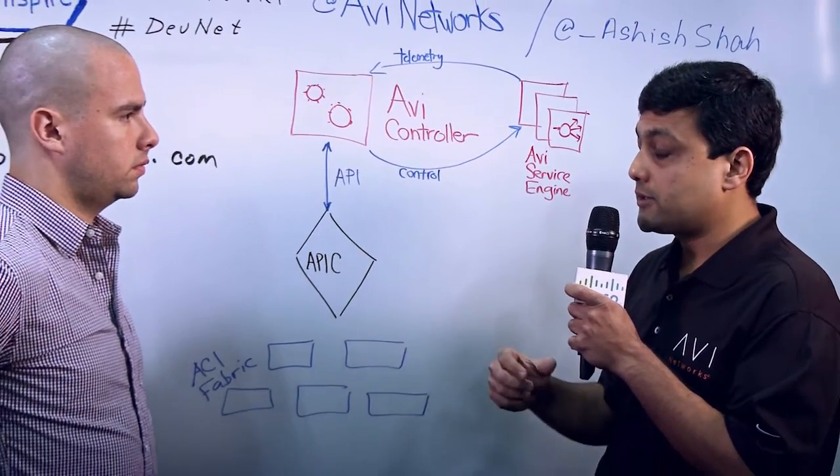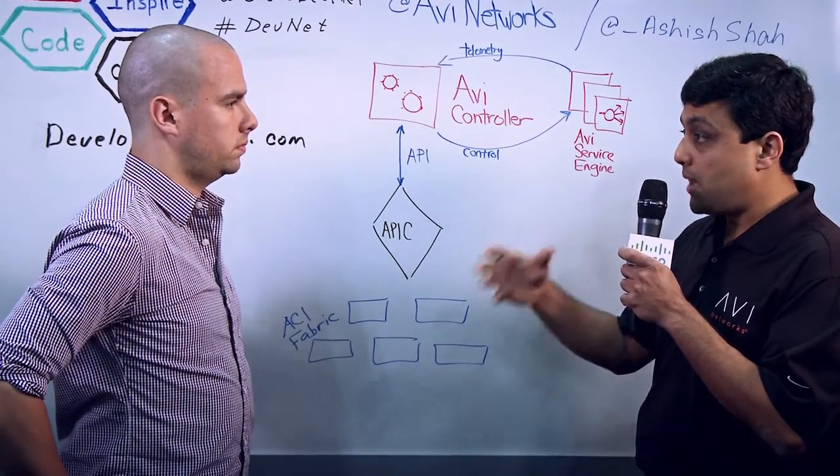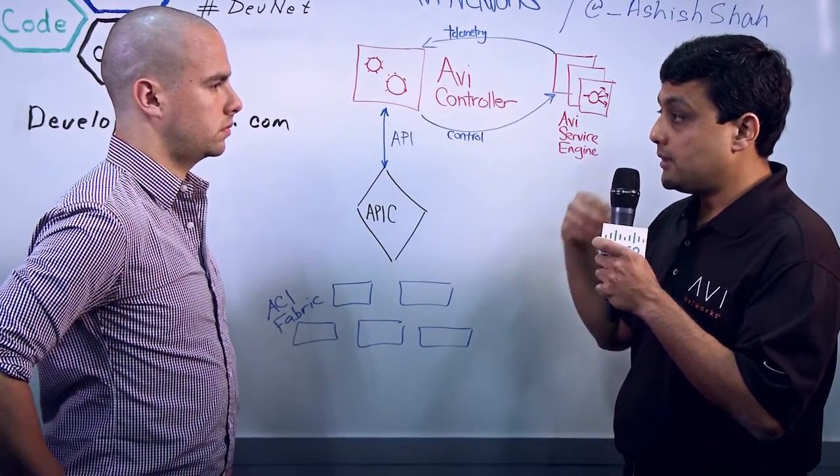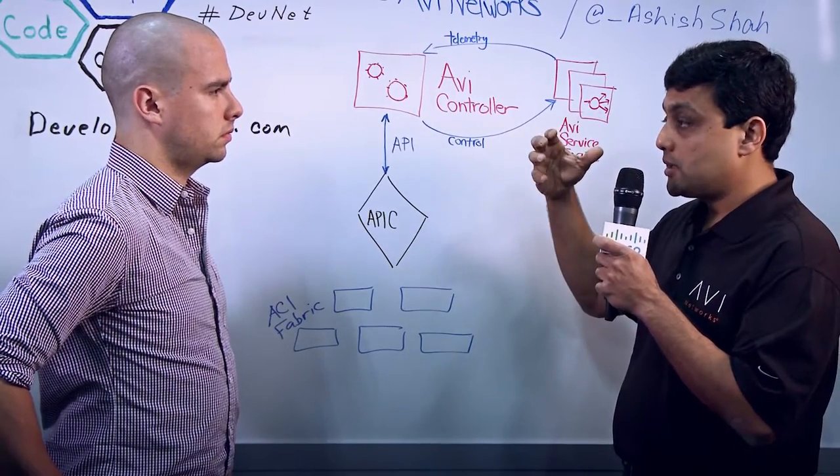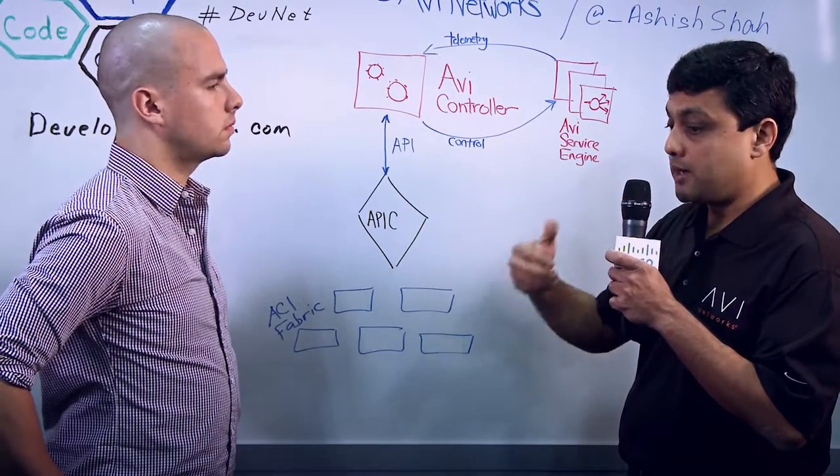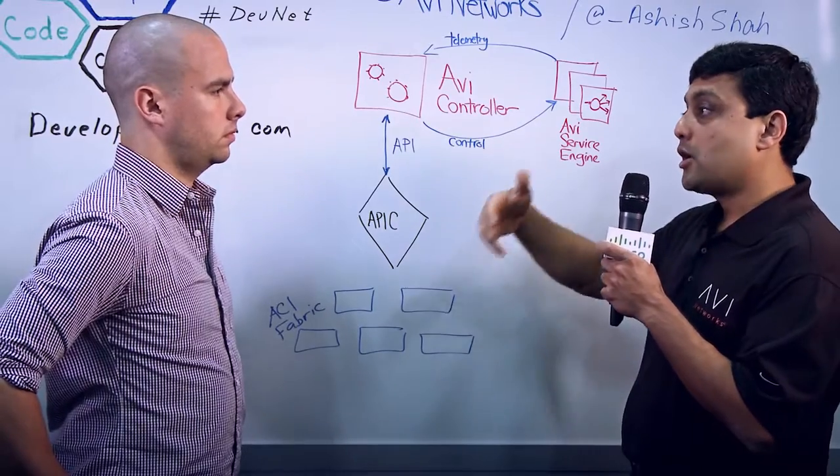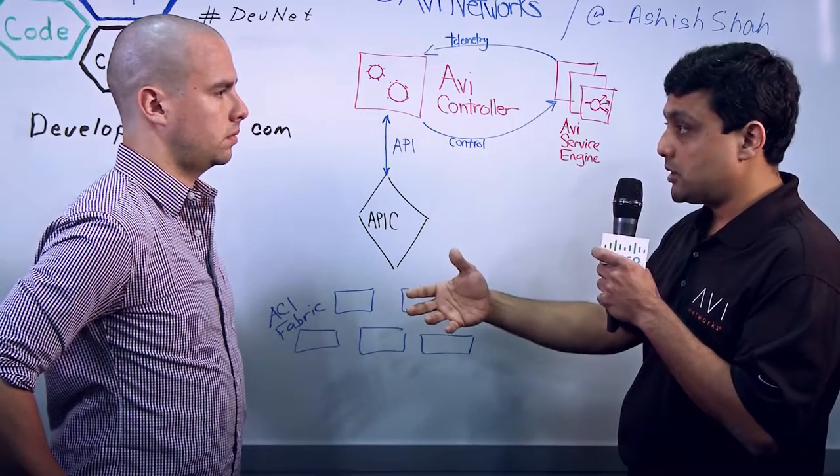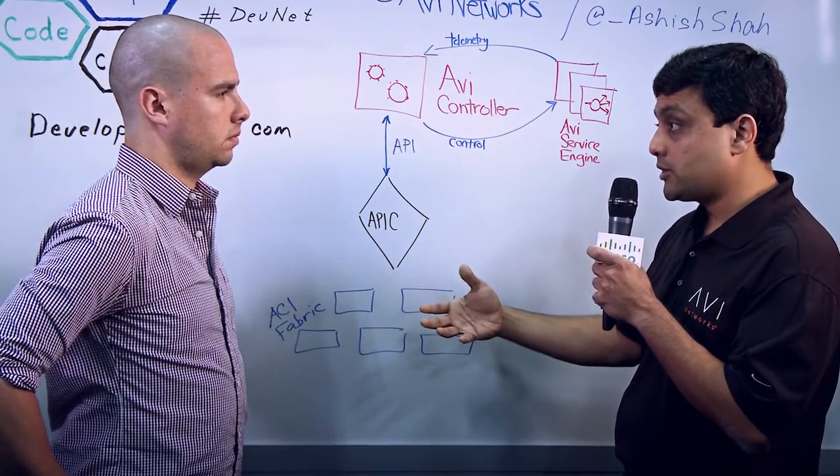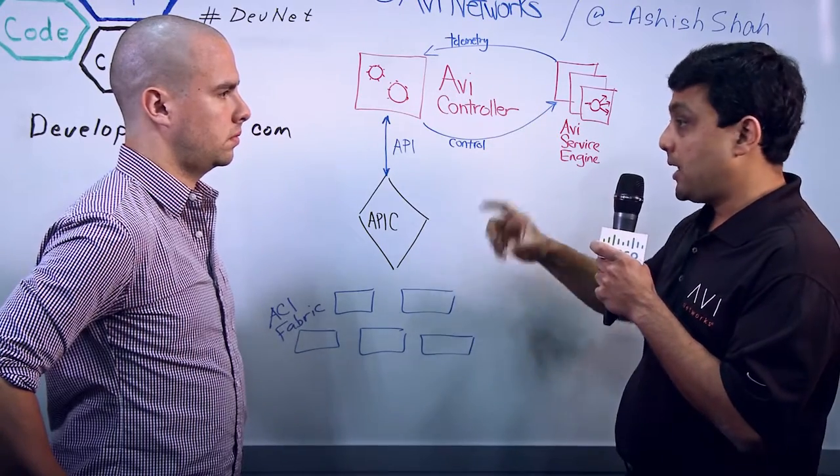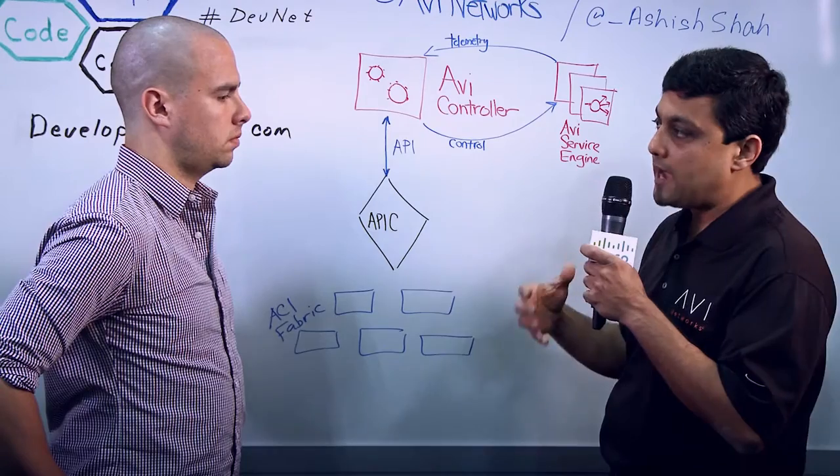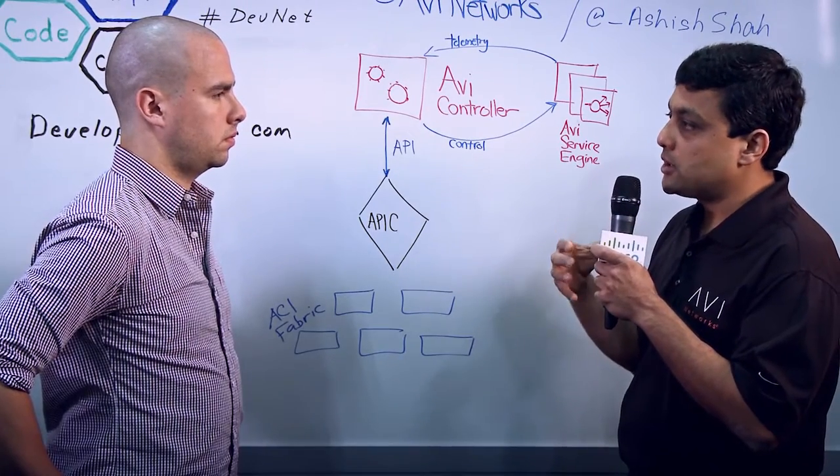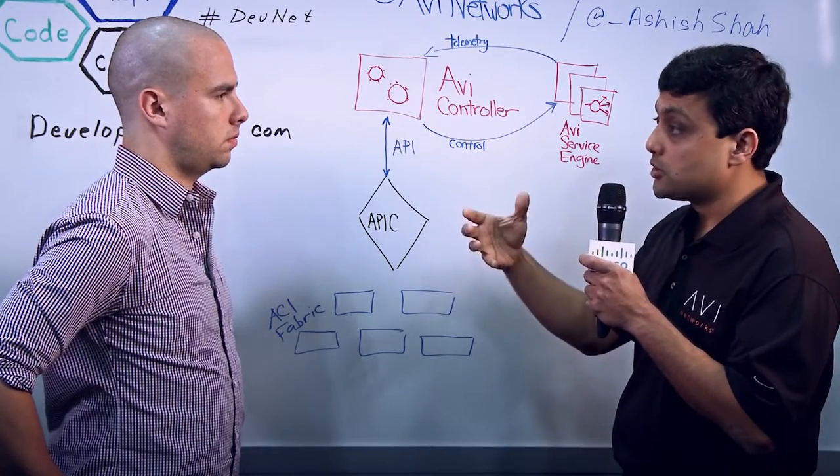So this customer, a financial services customer, is using AVI in their private cloud environments for automating the application deployment with their own dashboards, with their own orchestration system that calls APIC APIs to provision the ACI fabric, calls AVI APIs to insert the load balancing and application monitoring service. AVI and APIC interact with each other through the REST APIs. In the end,